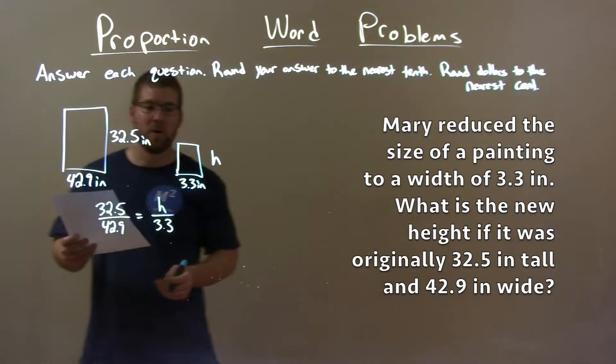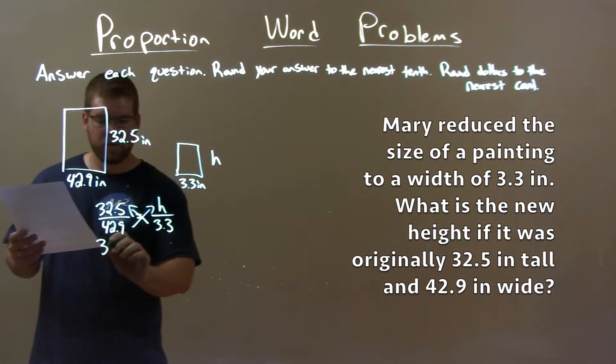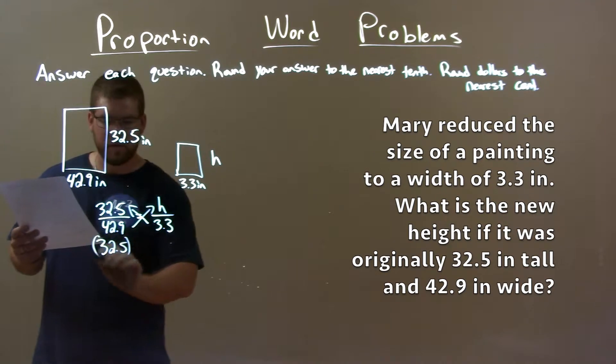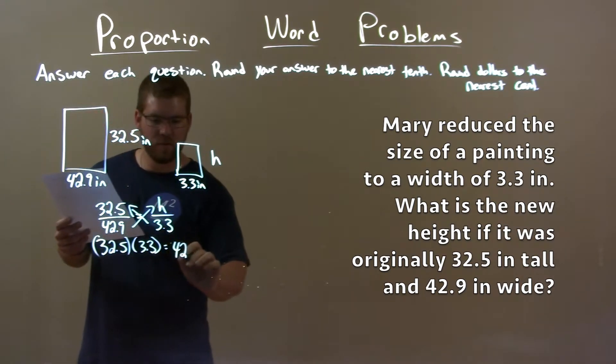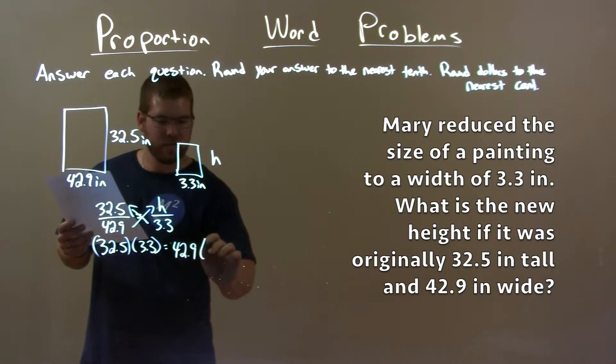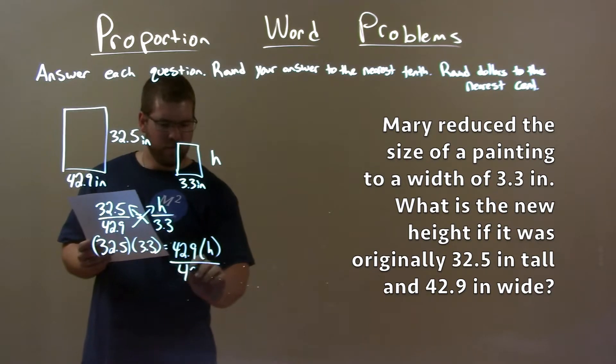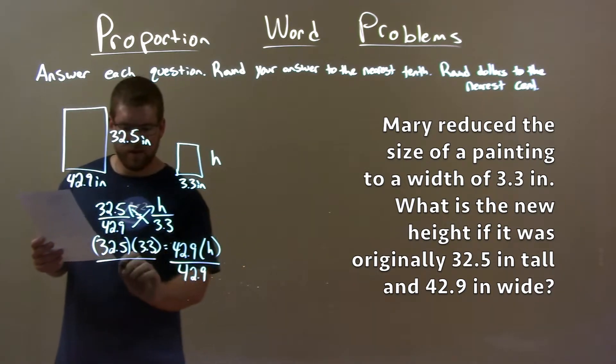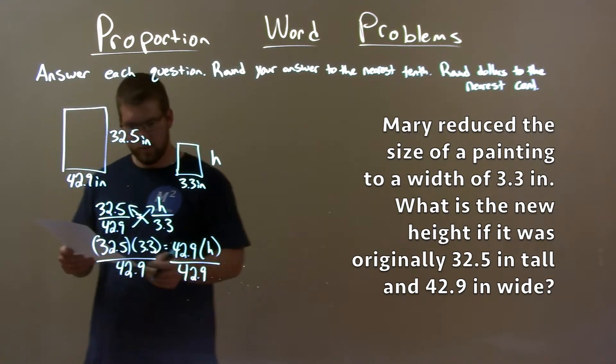Then we solve for h. Let's cross multiply here. 32.5 times 3.3 is equal to 42.9 times h. Now we divide both sides by 42.9 to get h by itself. And we take 32.5 times 3.3 divided by 42.9.